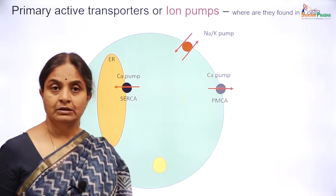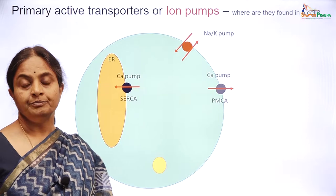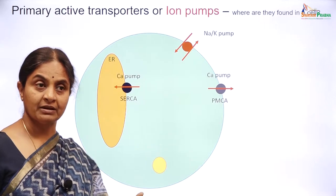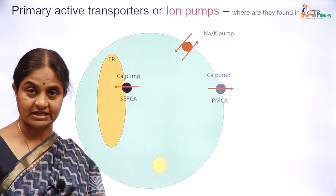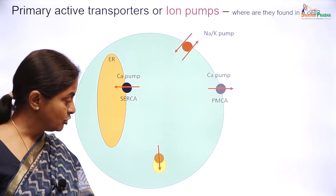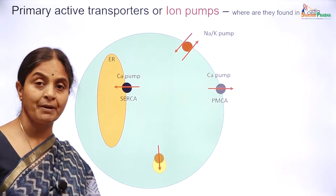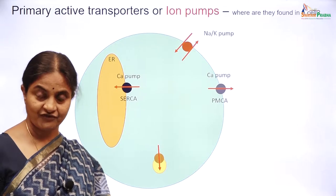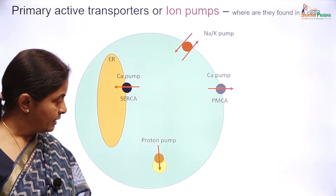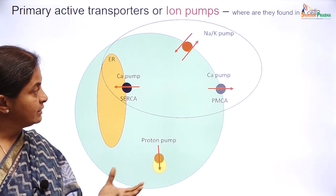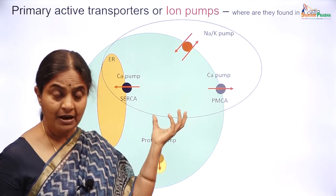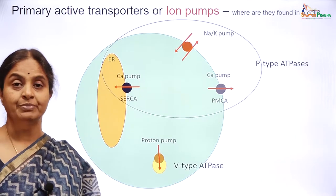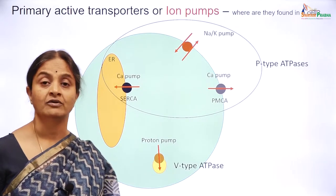There is another primary active transporter found on vesicular membranes — vesicles such as secretory vesicles and lysosomal vesicles. Almost all of these vesicles have a proton pump on their membrane, and acidification of the vesicle is important for its functionality. While the sodium-potassium, calcium, and hydrogen-potassium pumps are classified as P-type ATPases, the vesicular proton pump is classified as a V-type ATPase — V probably standing for vesicular.